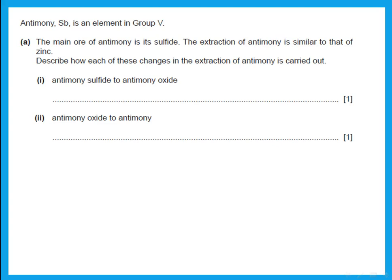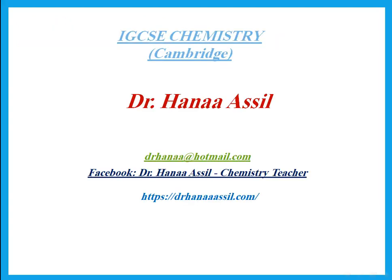Antimony is an element; the main ore of antimony is its sulfide. The extraction of antimony is similar to that of zinc, so don't be surprised. Antimony (symbol Sb) is in group five, so it has a valency of three. First, antimony sulfide is converted to antimony oxide by roasting in air. Then antimony oxide is reduced to antimony by reduction with carbon. That's the end of these questions — study them and do a quiz.